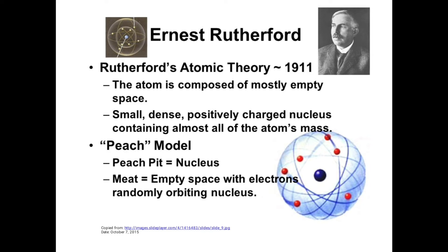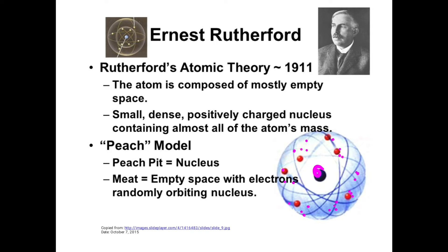Rutherford's atomic model is called the peach model — this often comes in MCQs. The peach pit (seed inside) represents the nucleus, and the rest of the peach represents empty space with electrons randomly orbiting the nucleus. So Rutherford said the nucleus is in the center, surrounded by vacuum, with electrons randomly orbiting around it.